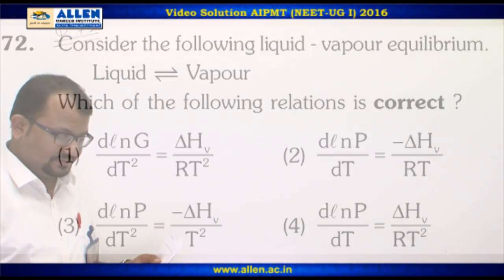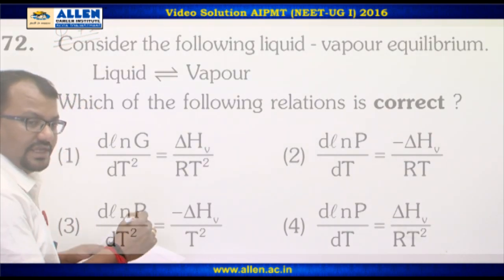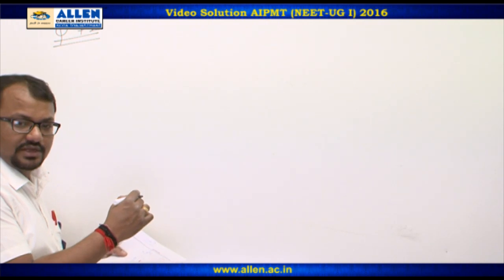Question number 72. Dependency of vapor pressure on temperature. The equation is Clausius-Clapeyron equation.